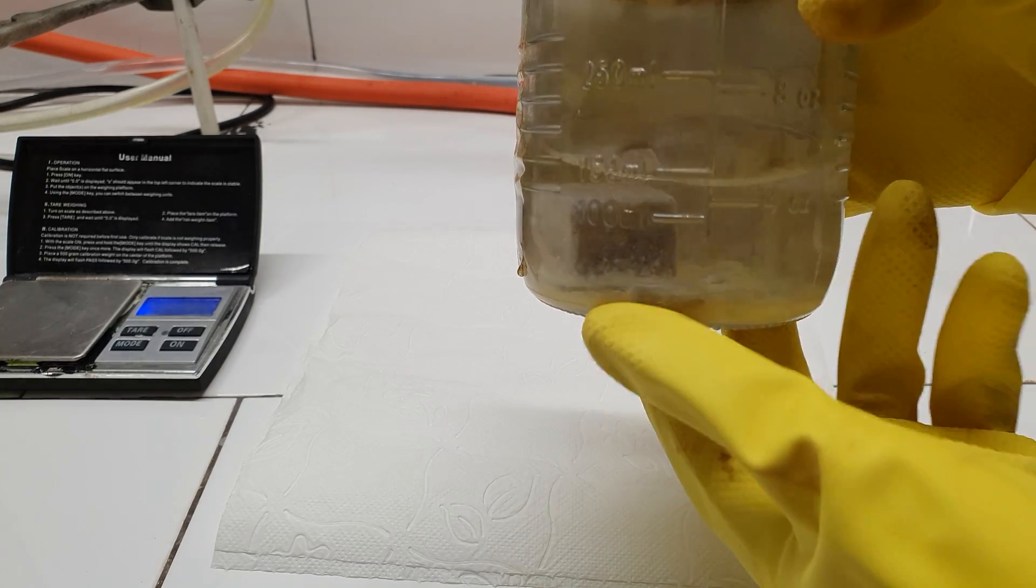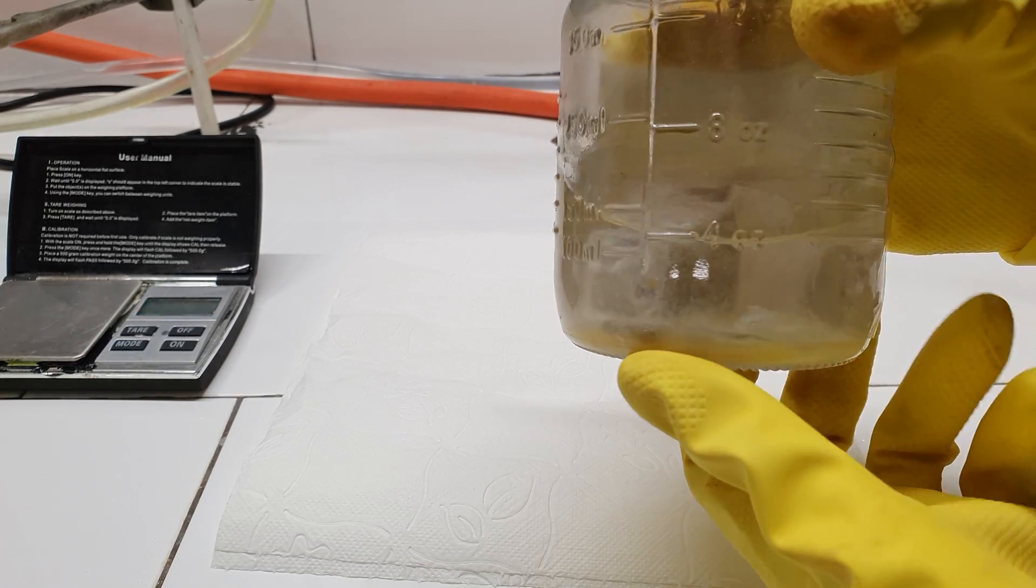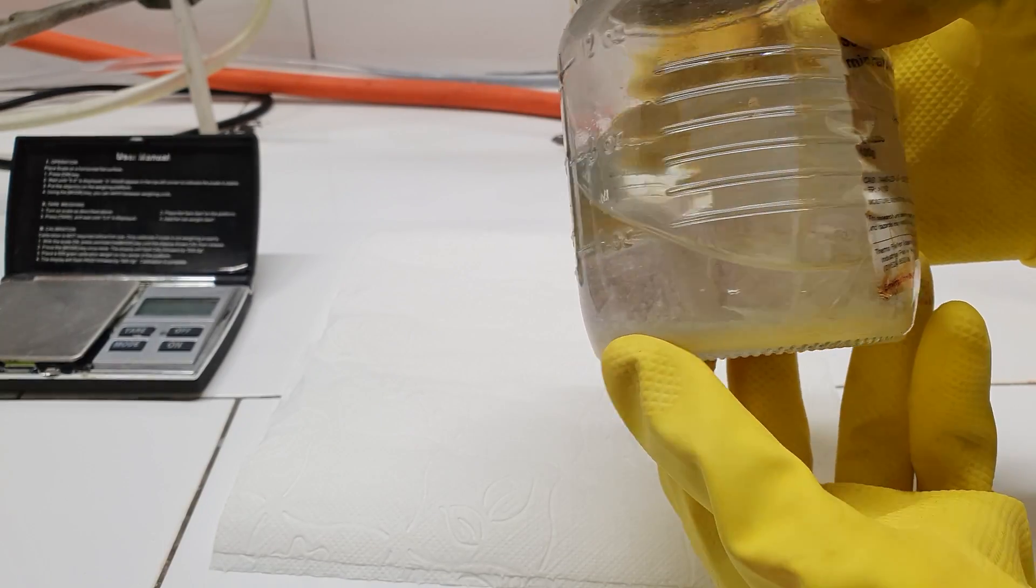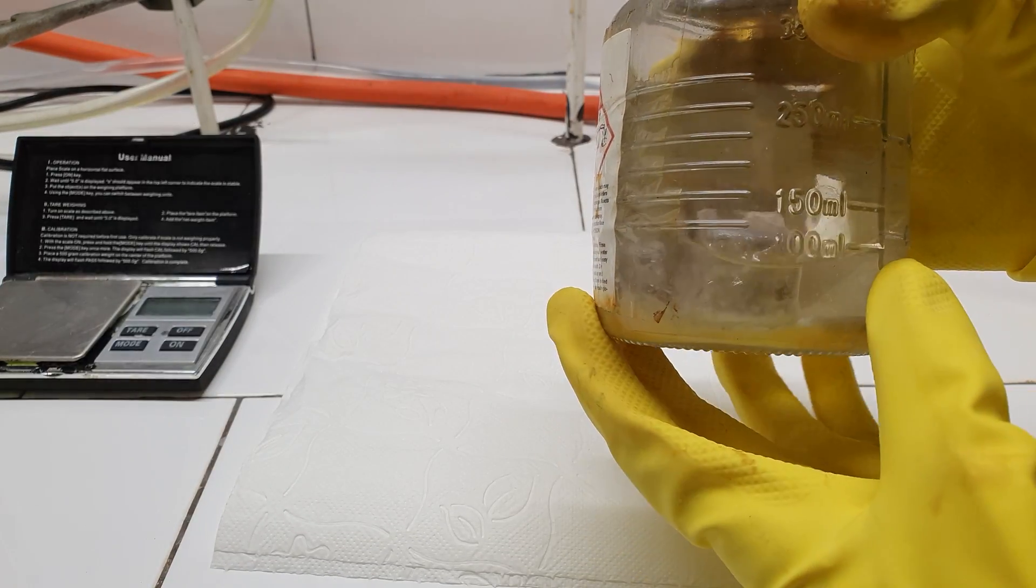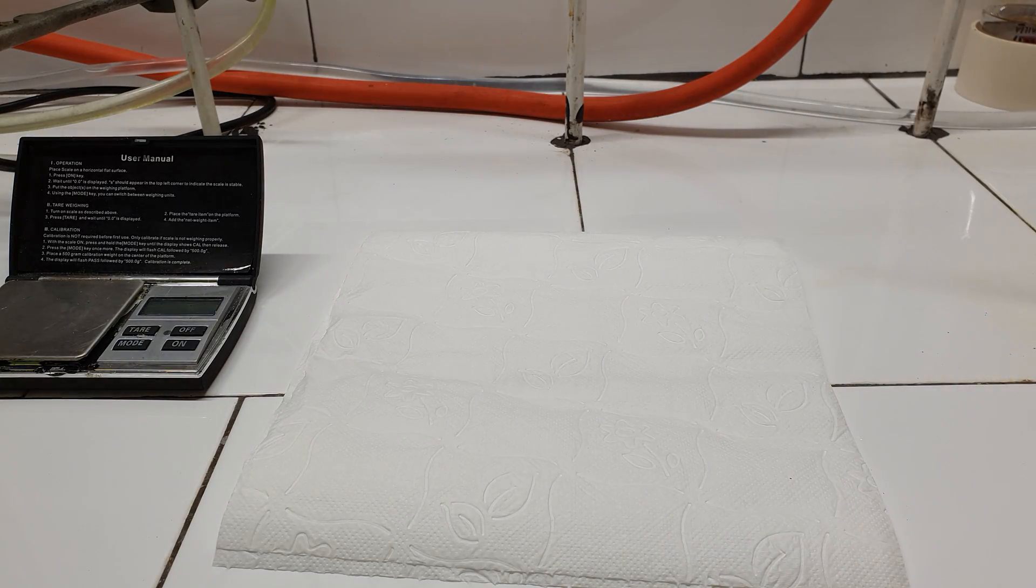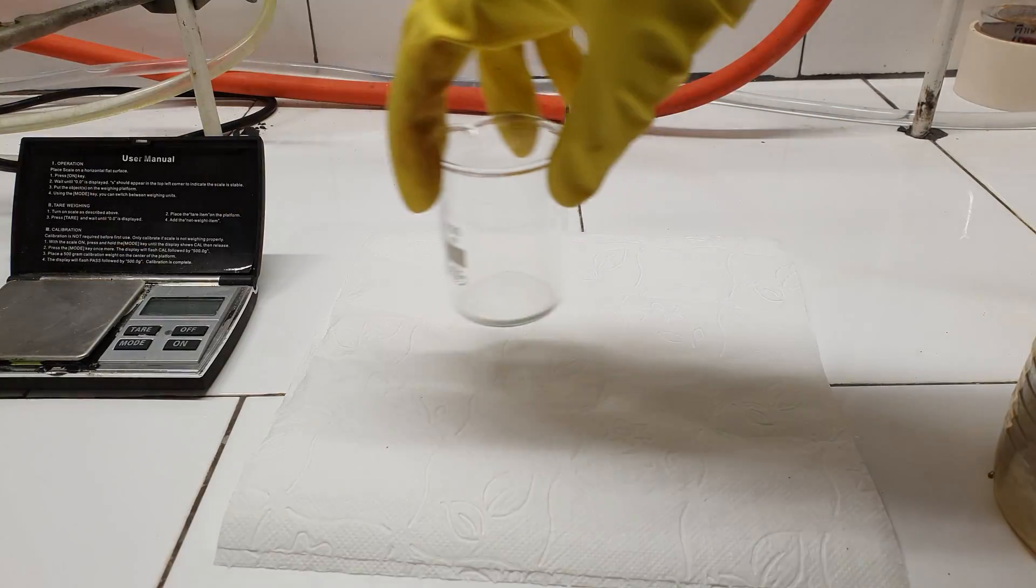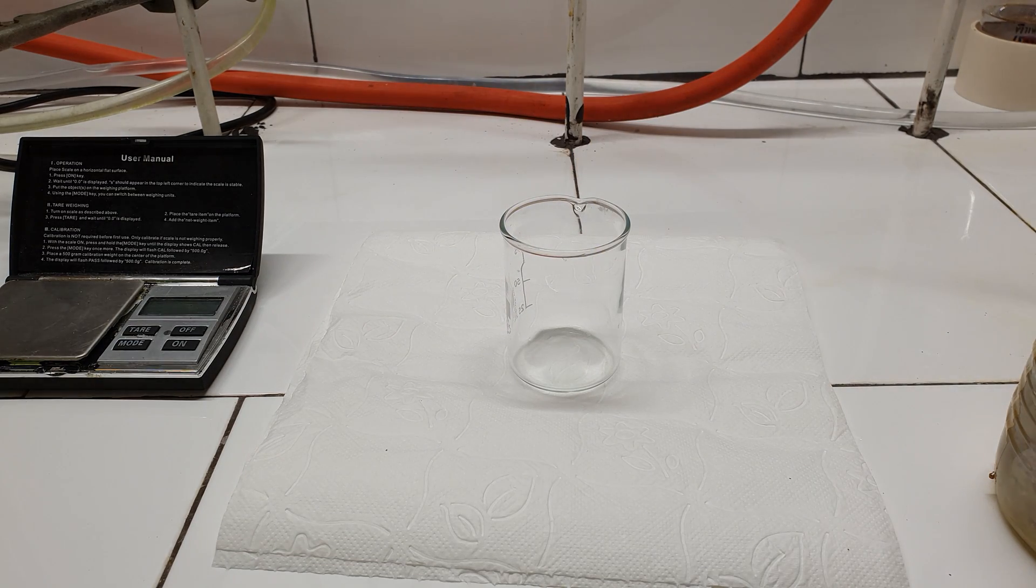This is my sodium metal. It is placed in mineral oil to prevent it from oxidation. Nonetheless, since it is several years old, it has some oxide layer formed on top of the chunks. To use it, I have to remove all of the oxide layer and chop it up into smaller pieces.